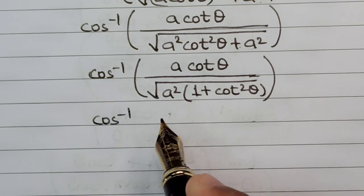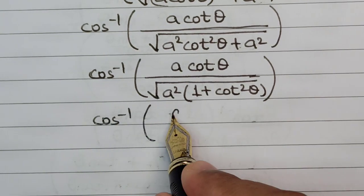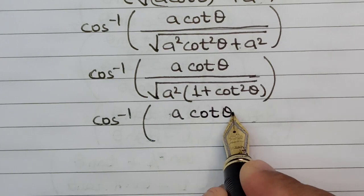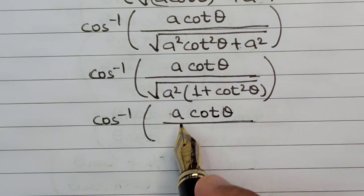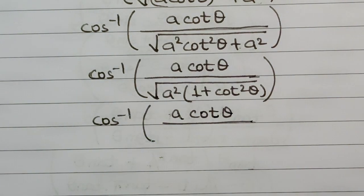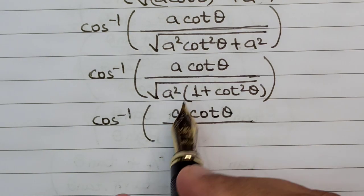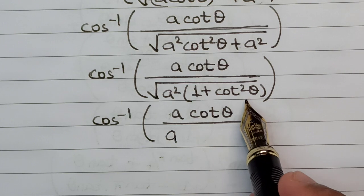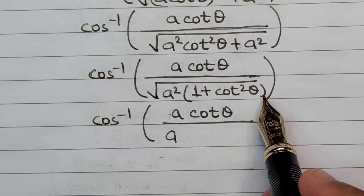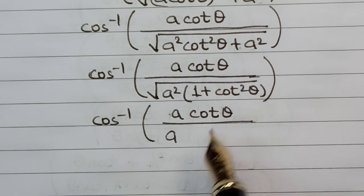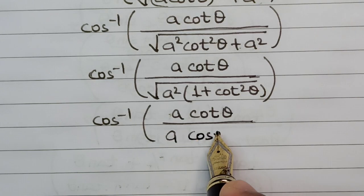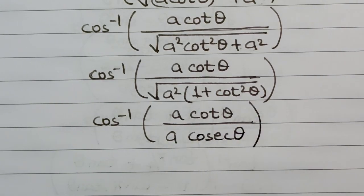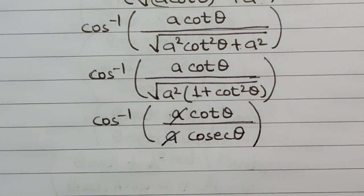So this will be cos⁻¹ of a cot θ divided by... let us skip a few steps. So square root of a² will be a, and the value of 1 + cot² θ is cosec² θ, which inside the square root becomes cosec θ here. So a and a will get cancelled out.